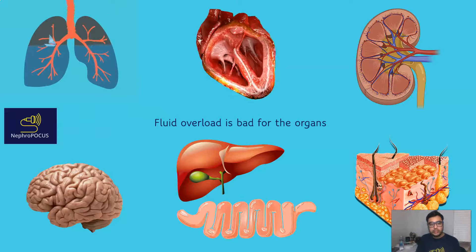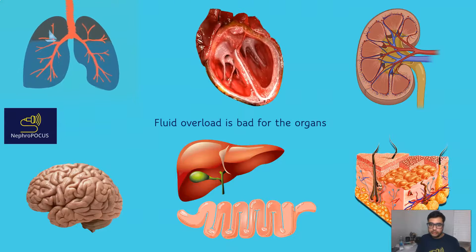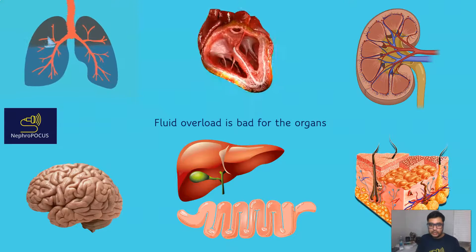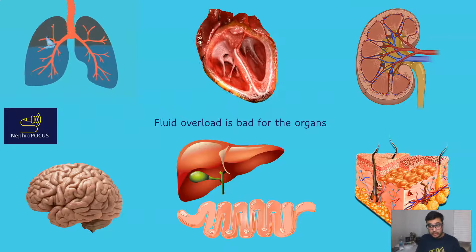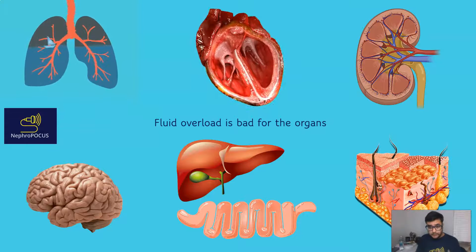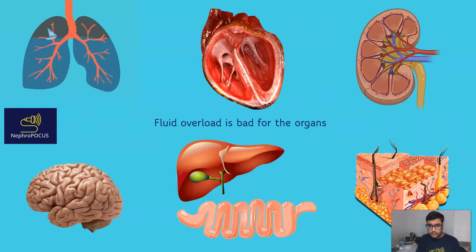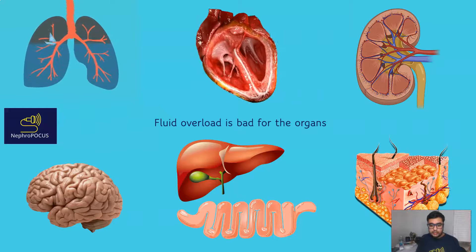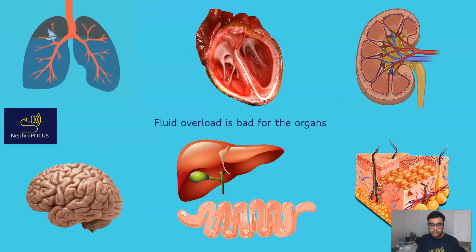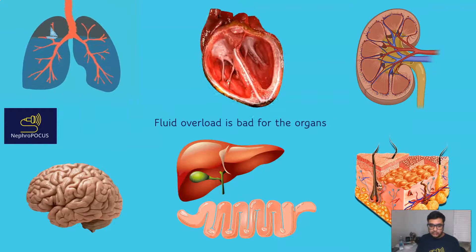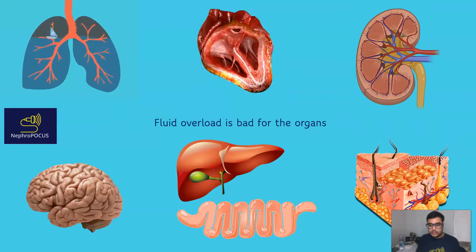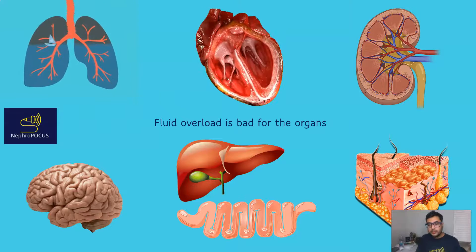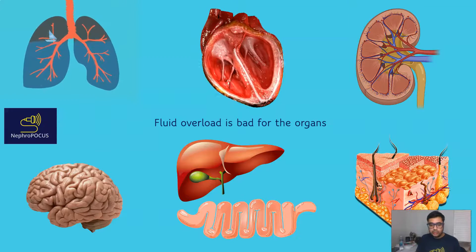But we do know that organs suffer from venous congestion. For example, in the lungs it can manifest as impaired oxygenation; in the heart as conduction abnormalities and contractility issues; acute kidney injury; altered mental status from cerebrovascular congestion; ileus and malabsorption in the gut; impaired synthetic function in the liver and cholestasis; and in the skin it may manifest as pressure ulcers and so on.